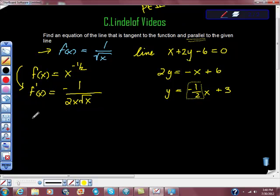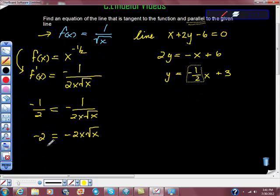So the slope of the line is one half. The slope of this function is negative one over two x square root x. When I cross multiply, I get negative two is equal to negative two x square root x. Divide by negative two and get one is equal to x square roots of x. We know that is true when x is equal to one.